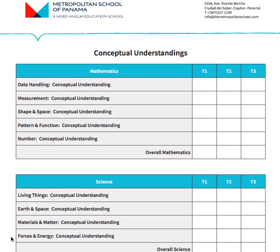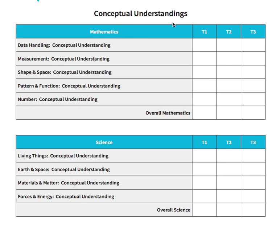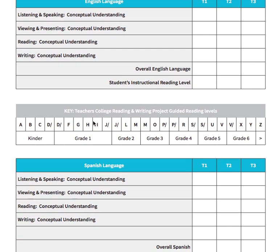On this page, you will see the grades for the conceptual understandings for each subject and the overall grade. A conceptual understanding is a big idea for a subject, not a specific skill. You can also see the reading level here, which gives you an idea of what level of books your child can read, as we are all working on becoming better readers.